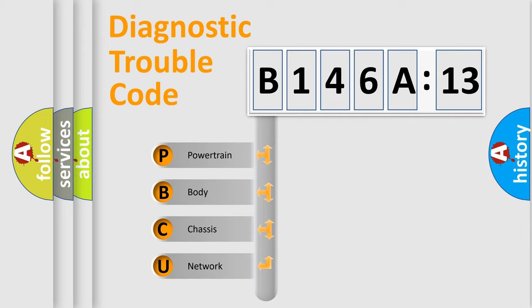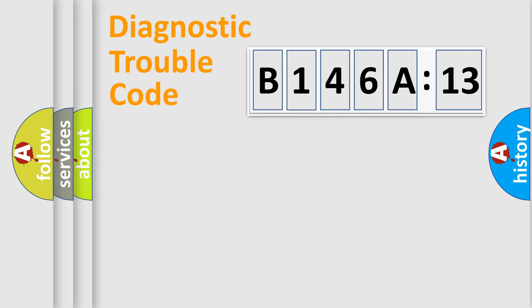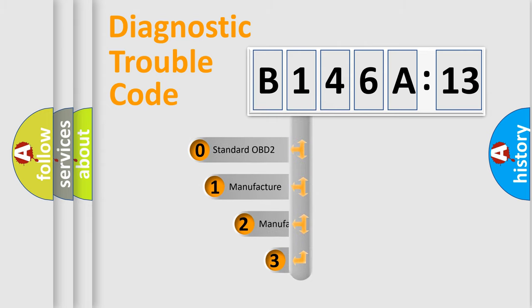We divide the electric system of automobile into four basic units: Powertrain, Body, Chassis, and Network. This distribution is defined in the first character code.